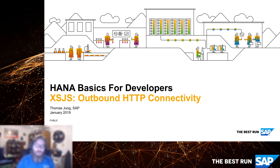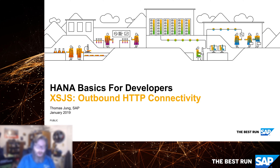Let's look at a couple of specific application development scenarios and how they can be achieved using XSJS. The first one in this video is how to make outbound HTTP calls. Our services run inside the HANA database with direct access to tables and views, but sometimes you want to combine that data with something from another system that you need to retrieve in real time.